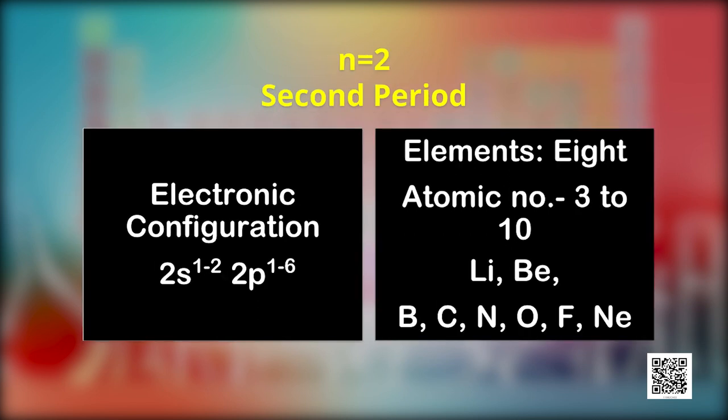The second period corresponds to the second energy shell (N=2). It has four orbitals — one 2s and three 2p — that can accommodate a maximum of eight electrons, so there are eight elements in the second period. It starts with lithium (atomic number 3, configuration 1s², 2s¹) and ends at neon (atomic number 10, configuration 1s², 2s², 2p⁶).